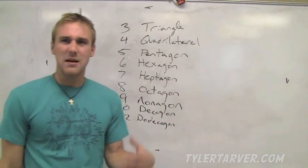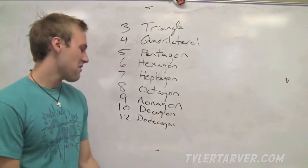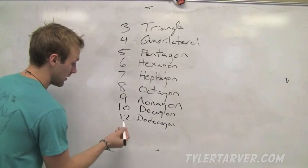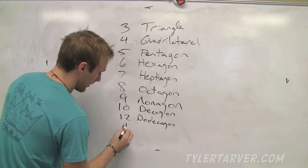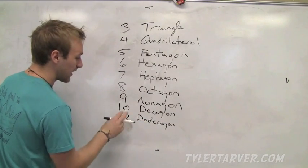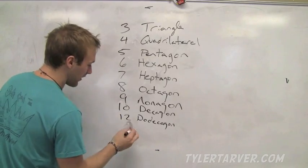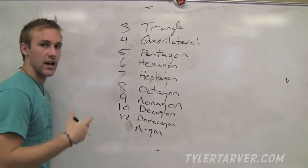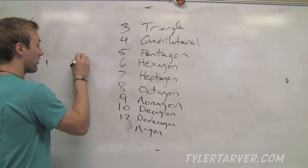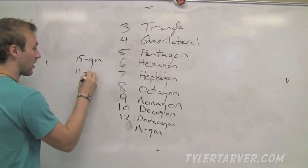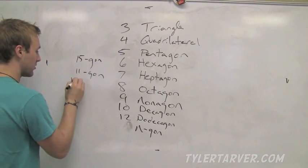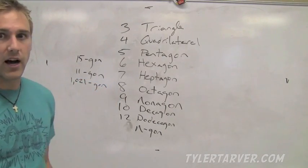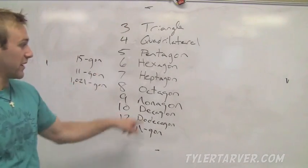Eleven, we're going to skip. Twelve is a dodecagon. You remember that because a decagon is ten, dos is two, dos plus decagon is twelve. You're thinking, you skipped number eleven. That's because we don't have a special name for number eleven. Anything eleven and up, that's called an n-gon.